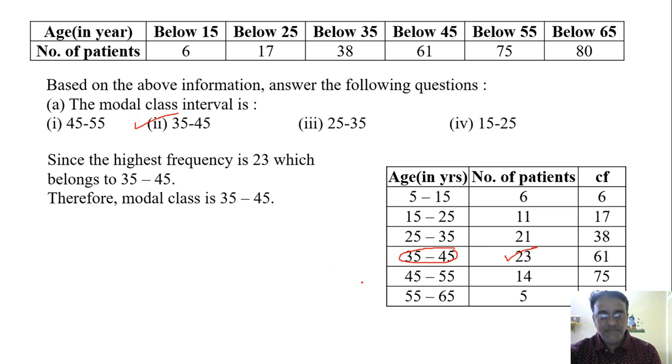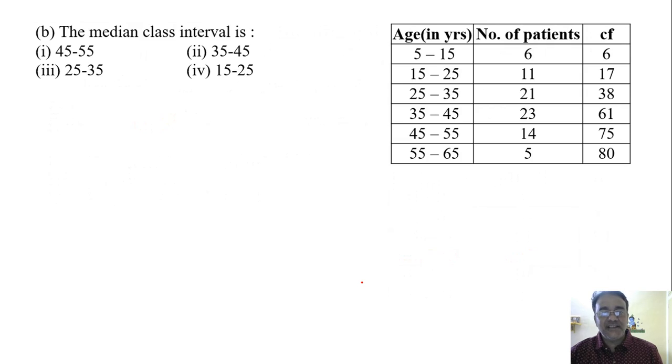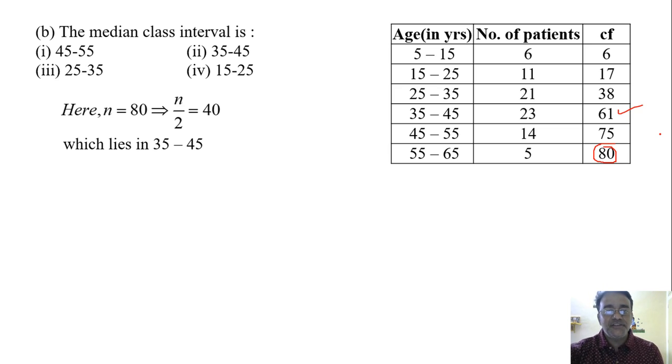Now we'll move toward the second question: the median class interval. What is the value of n here? 80. So n by 2 is 40. Just above that value, see the cumulative frequency of 61, and it belongs to which class? 35 to 45. So median class is 35 to 45. Which option is correct? Second option.